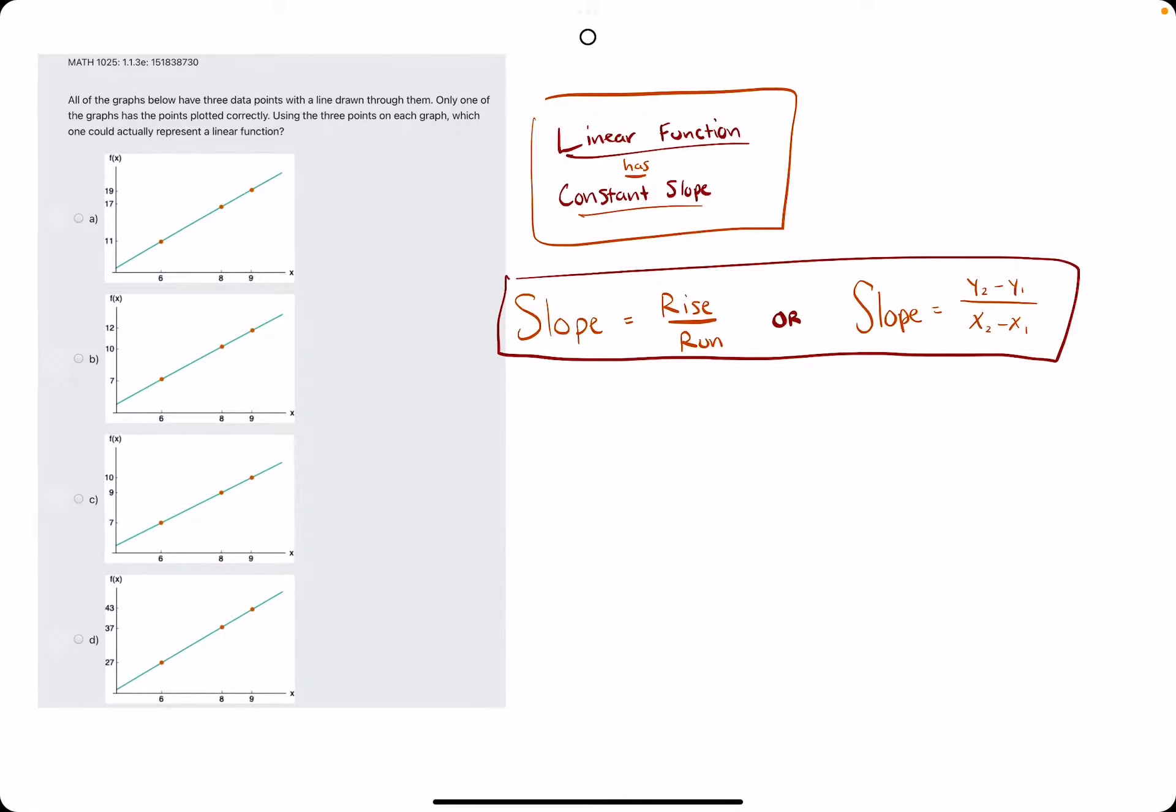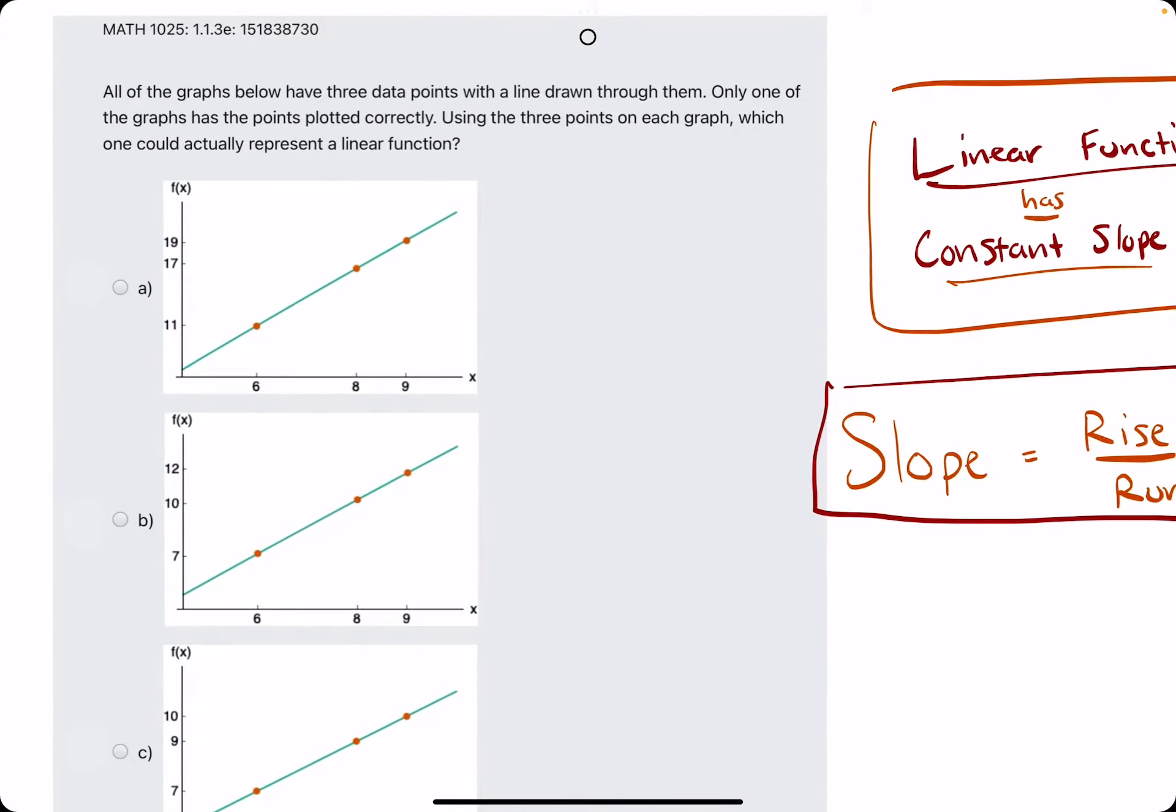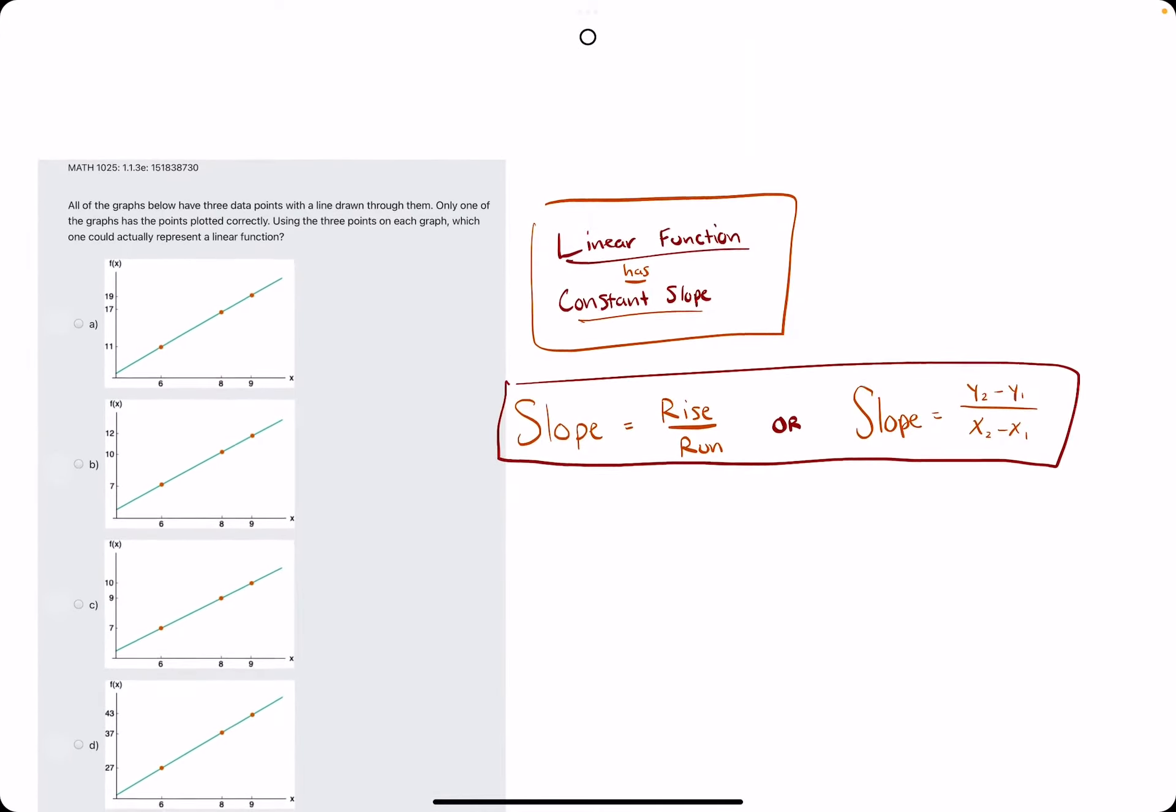Okie dokie, great problem. Here in this problem they give us four graphs with all seemingly linear functions, but they ask us which of these could actually represent a linear function.